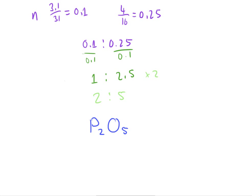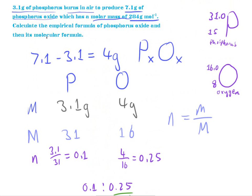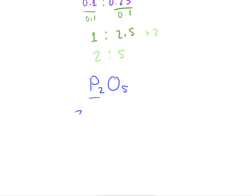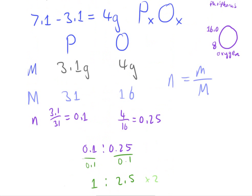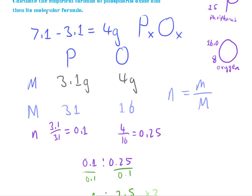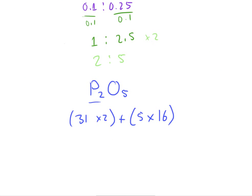And so, to find out the empirical formula of this, I'm using my periodic table, I can find out first the molar mass of phosphorus, which is going to be, let's see, 31, 31 times 2. And for oxygen, it's going to be 5 times 16, 16, which I got from the periodic table. I mean, no, the data I've got here. And this would give me...